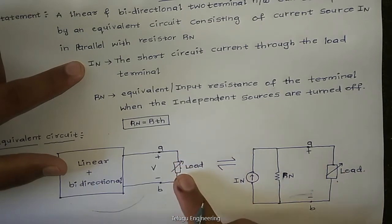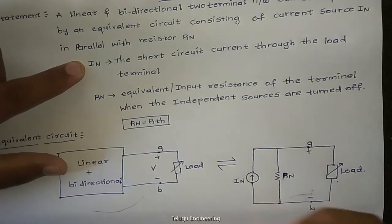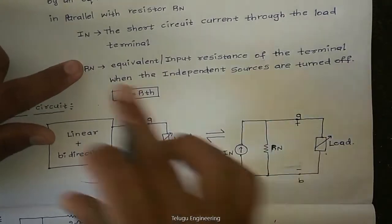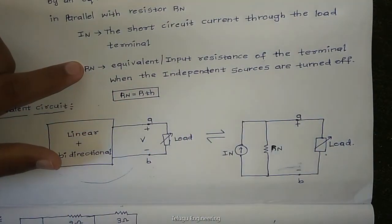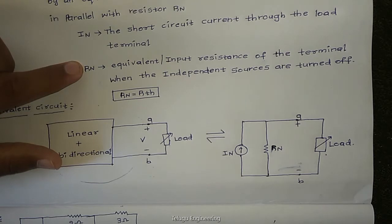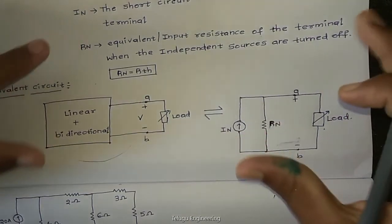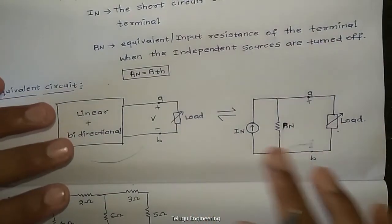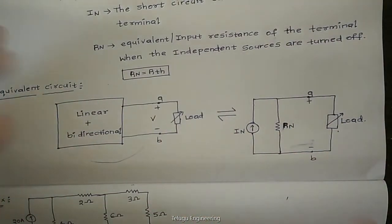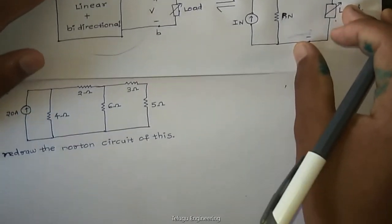So this is IN and Rn. Norton resistance Rn is similar to Thevenin resistance — same process. If there are any independent voltage sources, short-circuit them. If there are any independent current sources, open-circuit them. This is the equivalent circuit diagram.